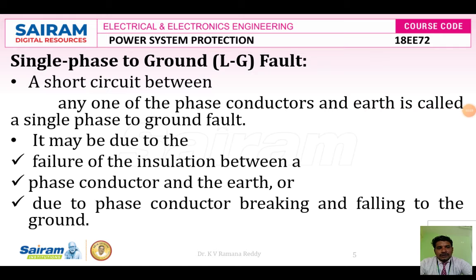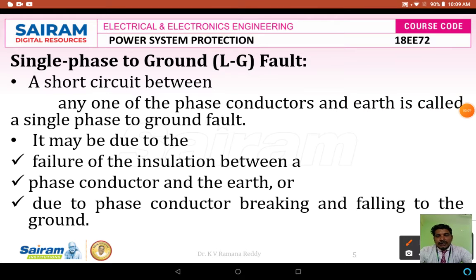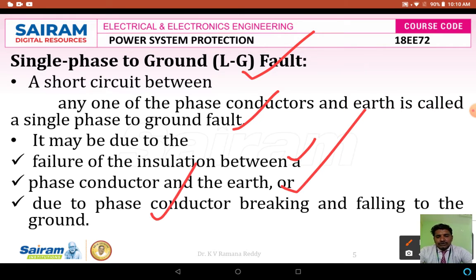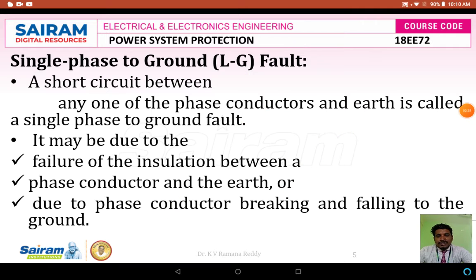Let us discuss about the first class of unsymmetrical fault, which is called as single-phase to ground fault, that is called as LG fault. A short circuit between any one of the phase conductors and earth is called as a single-phase to ground fault. It may be due to the failure of insulation between a phase conductor and the earth, or due to the phase conductor breaking and falling to the ground.